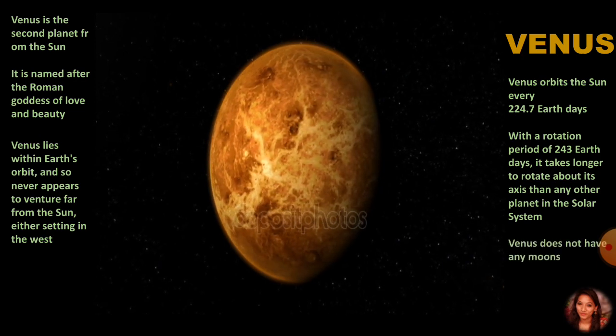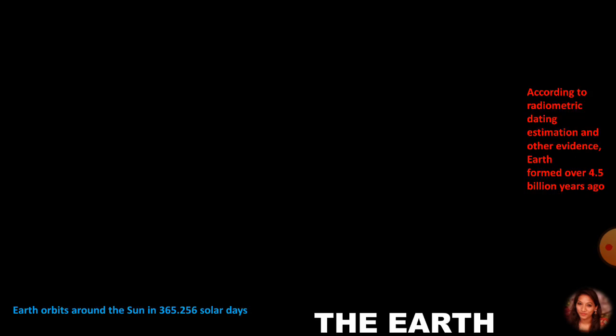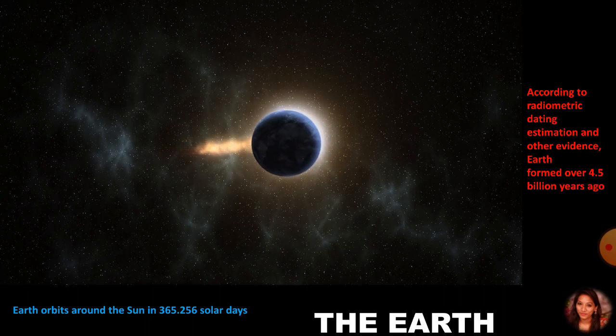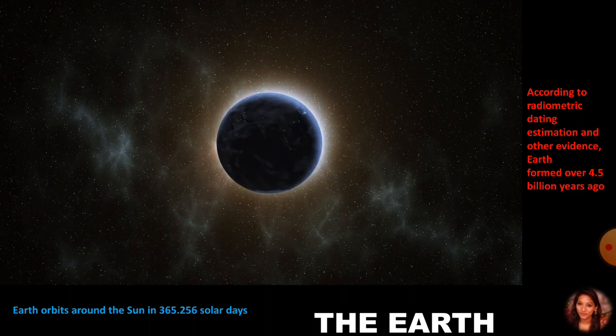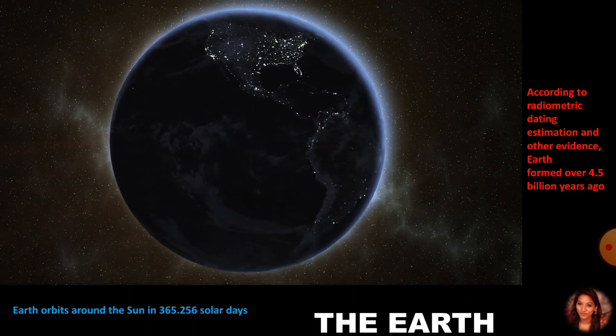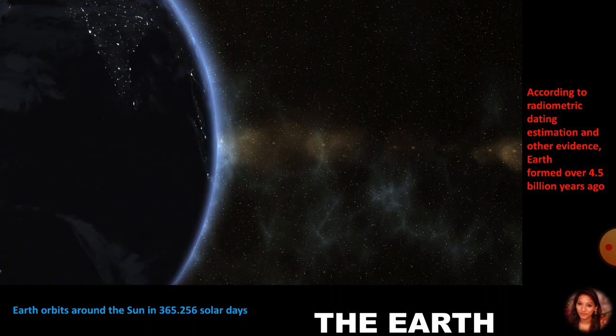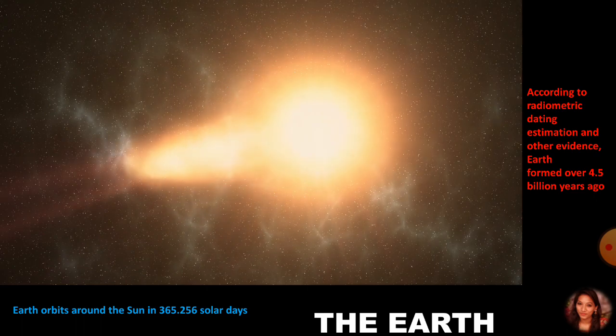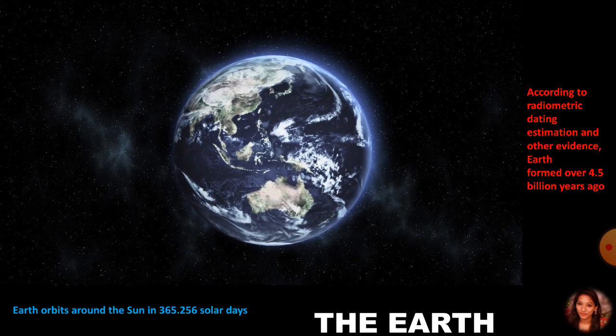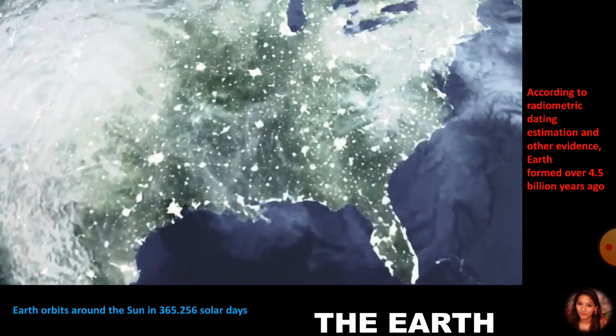Now let us move to Earth. According to radiometric dating and other evidence, Earth formed over 4.5 billion years ago. The Earth orbits around the Sun in 365.256 solar days. Earth is the only planet in the solar system on which life is known to exist. Some special environmental conditions are responsible for the existence and continuation of life on Earth. This includes just the right distance from the Sun so that it has the right temperature range, presence of water, a suitable atmosphere, and the blanket of ozone.